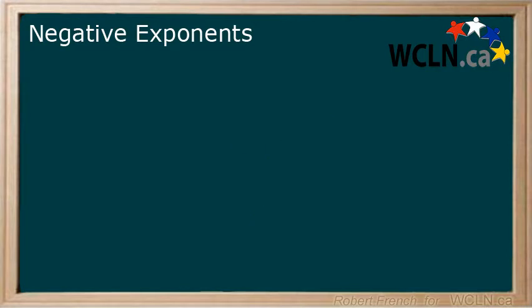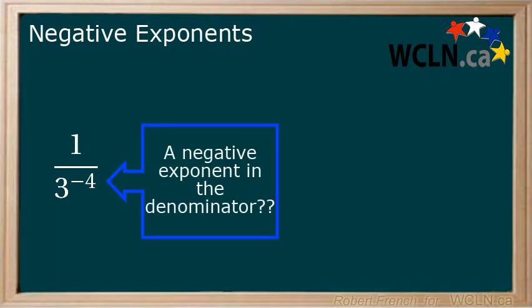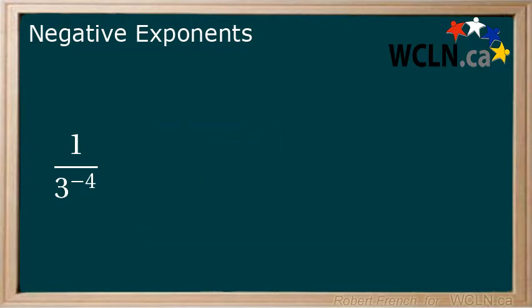Now let's change things up a bit. Here we have 1 over 3 to the power of negative 4. I know, we just finished making exponents positive by moving them into the denominator and now I've put a negative exponent in the denominator. How do you think we'll solve this? Well, we flip it over the fraction line to make it positive. So now we have 3 to the power of 4 which is 81.